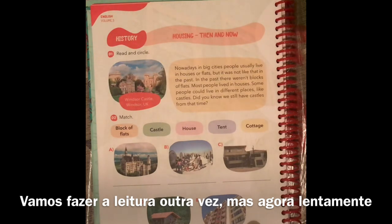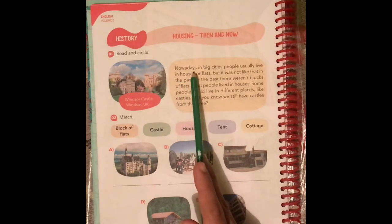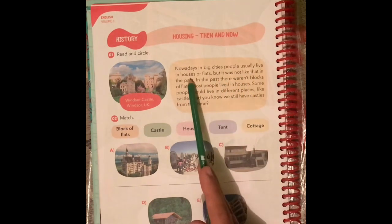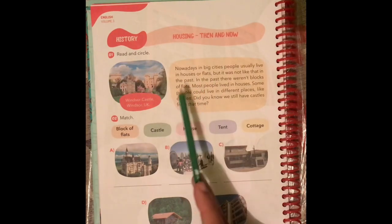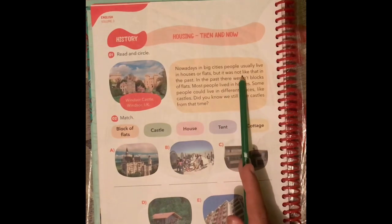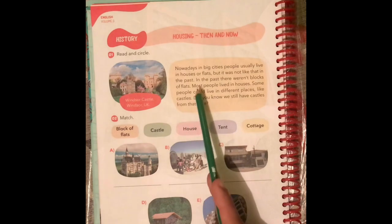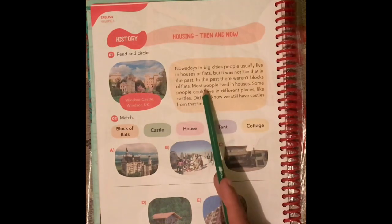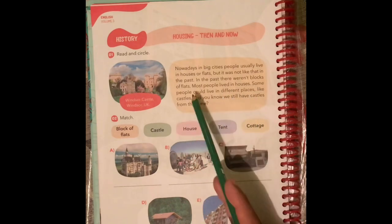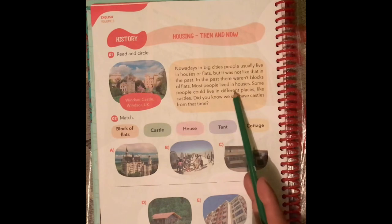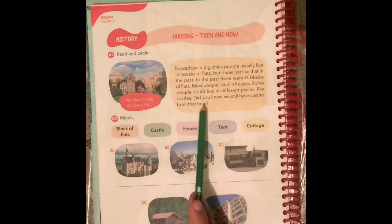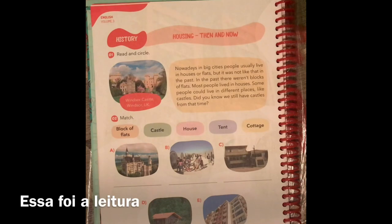Now let's read it once again, slowly. Nowadays... in big cities... people usually live in houses or flats, but it was not like that in the past. In the past, there weren't blocks of flats. Most people lived in houses. Some people could live in different places, like castles. Here you have an example of a castle. Did you know we still have castles from that time? That was the lecture.